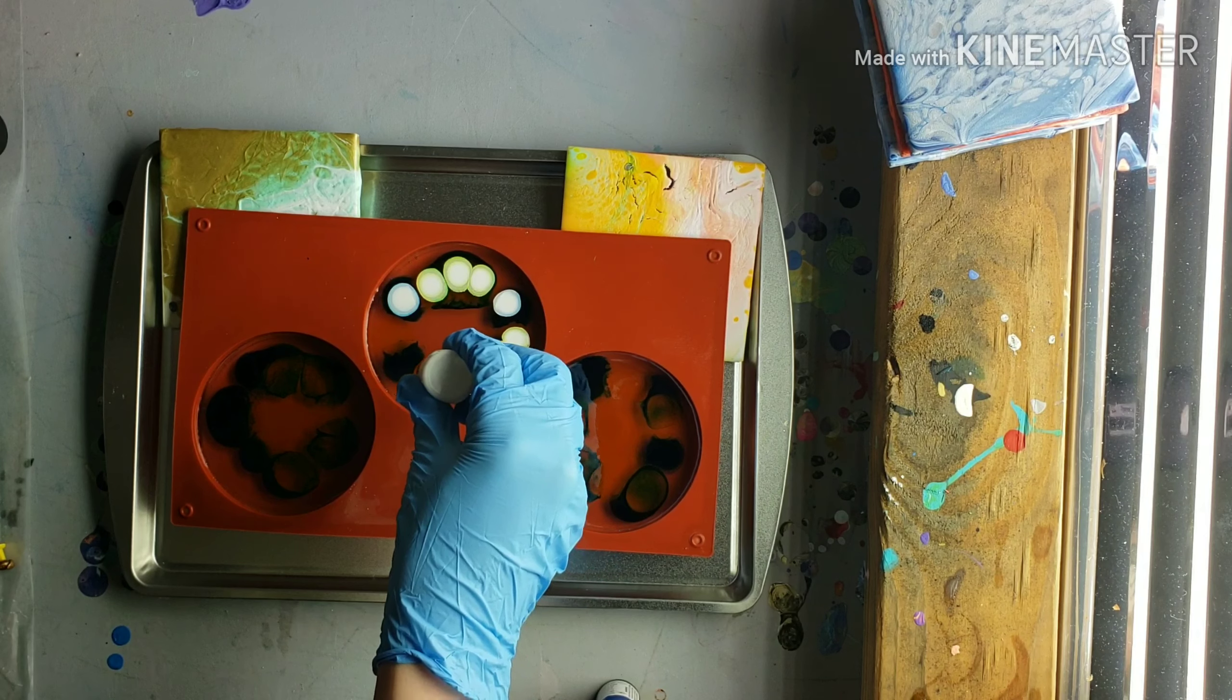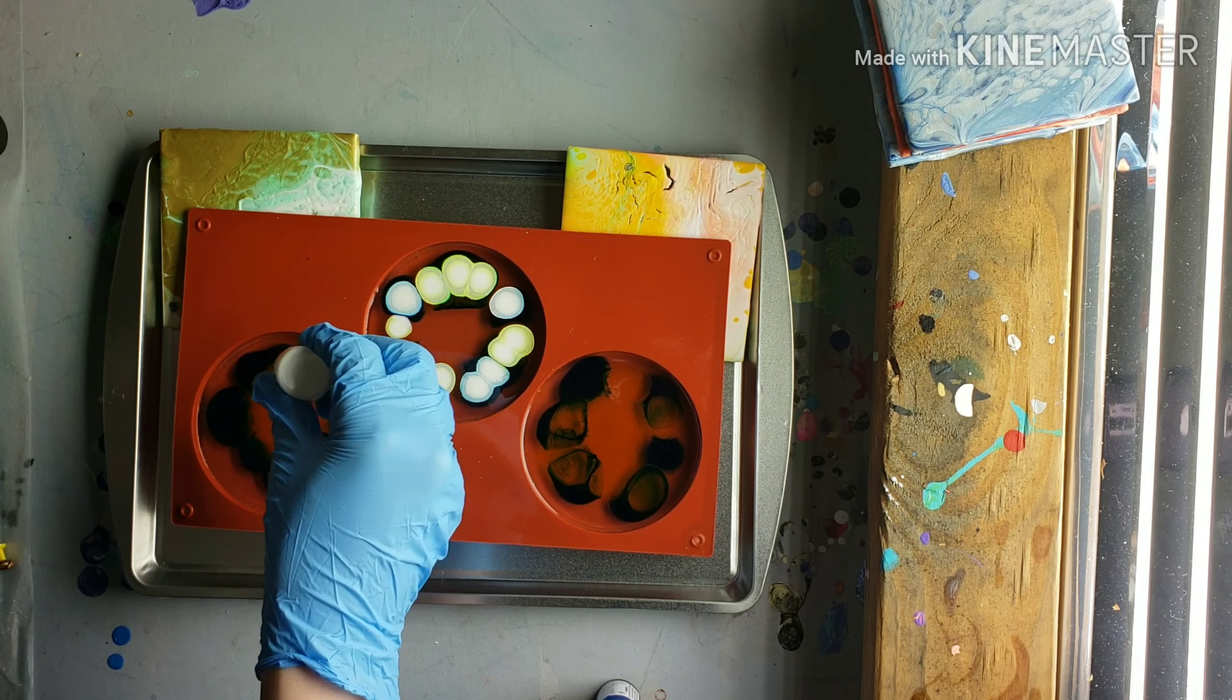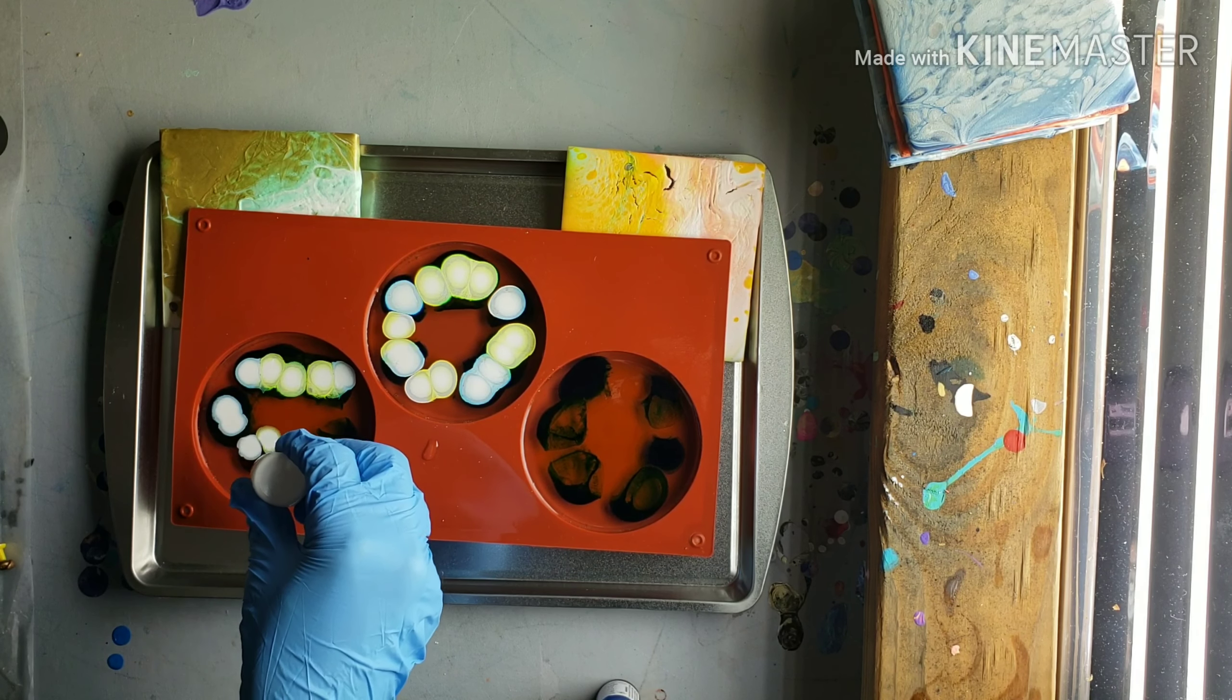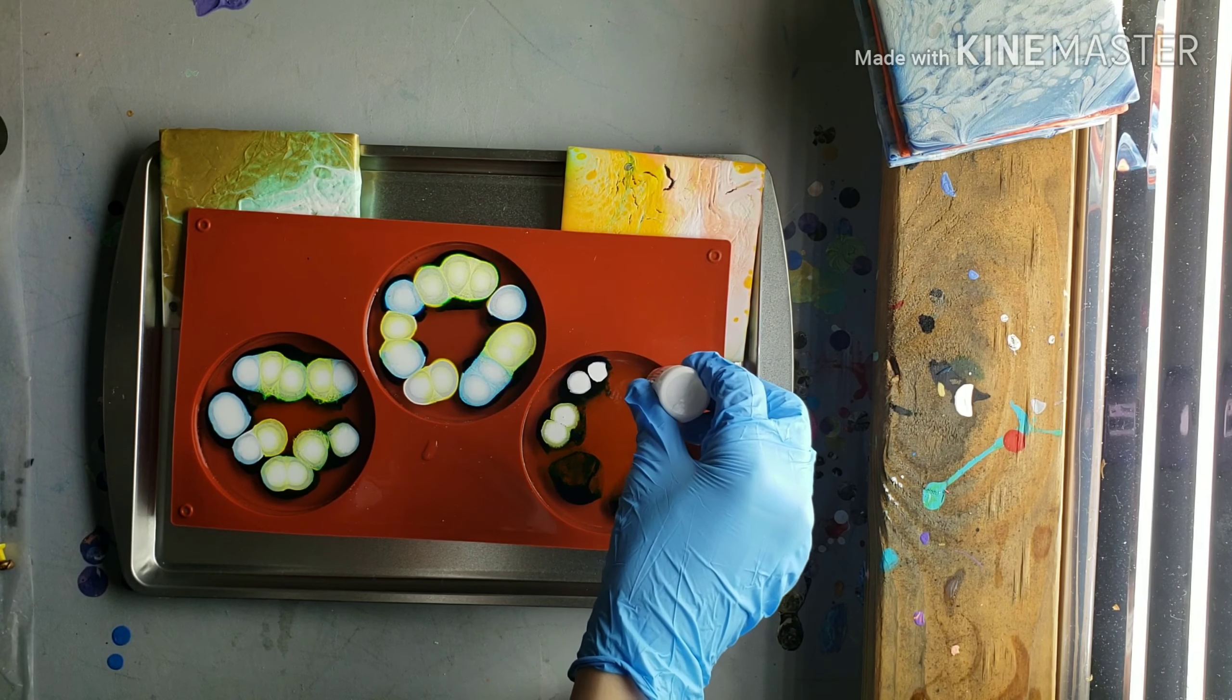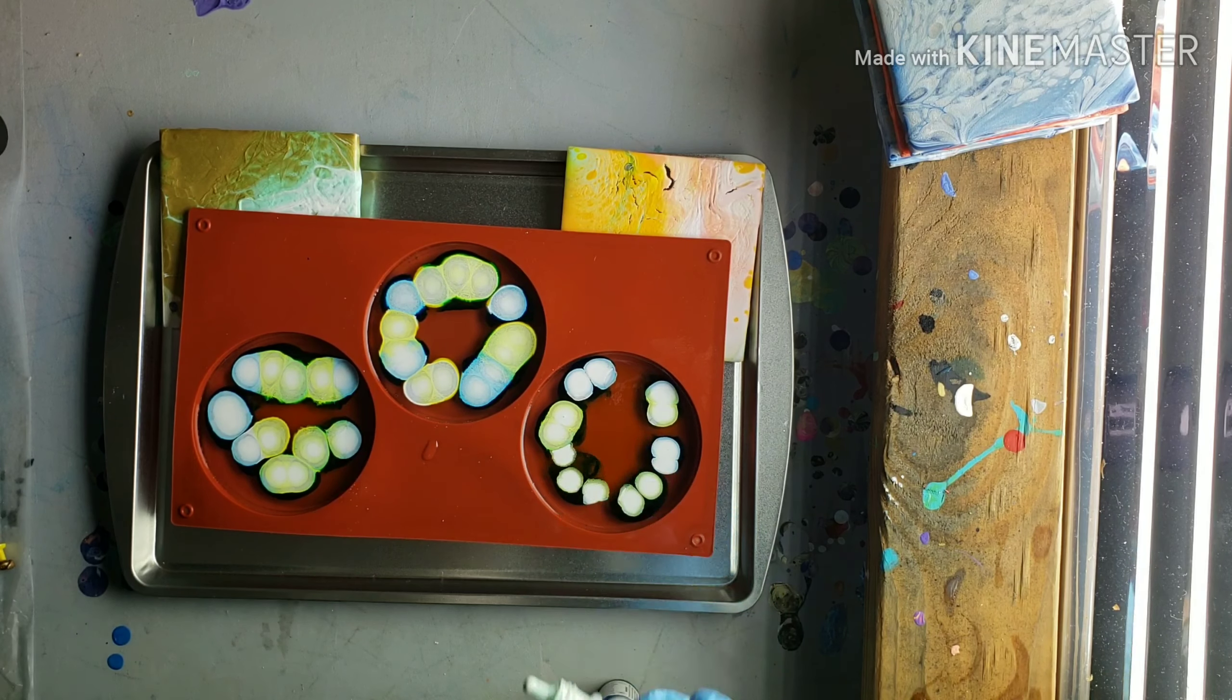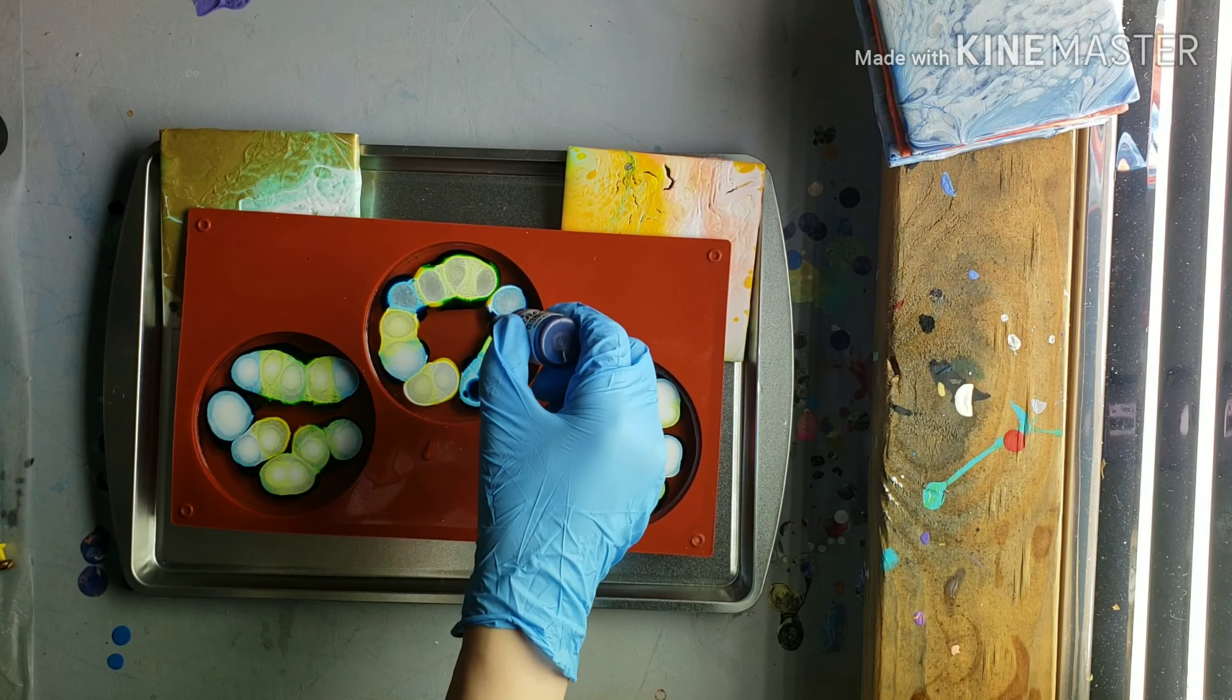Now I'm going in with the Pinata Blanco and I'm going over every single blue and yellow dot that I made. This Blanco, it's heavier than all the other colors so it's going to sink to the bottom and give you the cool Petri dish effect that you're looking for. So I'm just going through on each of these and adding a spot of white to every place where I put blue or yellow.